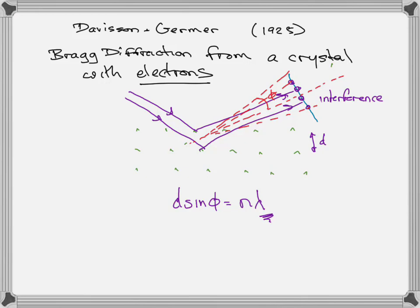Remember what n is: n is an integer. d is the spacing of the crystal. phi is the angle at which you see one of the interference fringes. You've got your first-order interference fringe at n equals 1, your second-order n equals 2, third-order n equals 3. As you go away from the path that it would take if it went straight through, you've got your first-order fringe, your second-order fringe, your third-order fringe — n equals 1, n equals 2, n equals 3.